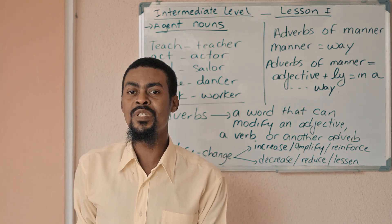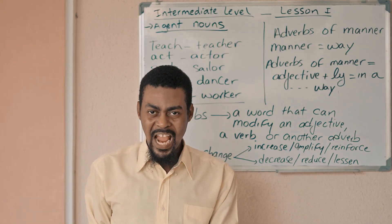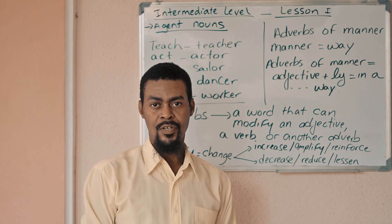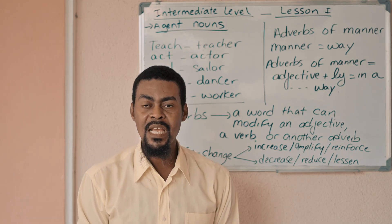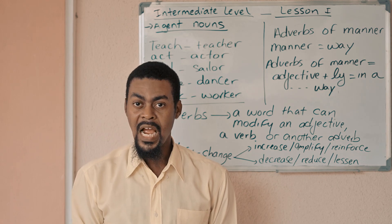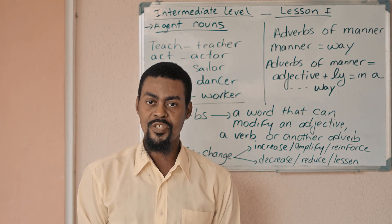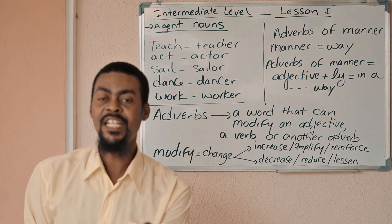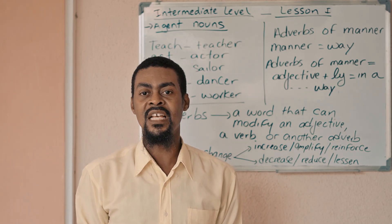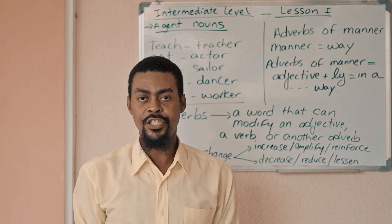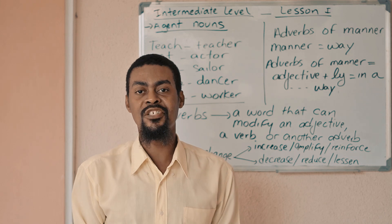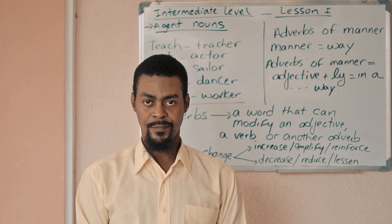We do not use a name or another noun after an agent noun. I am a teacher, not teacher Nelson. I can say I'm Mr. Nelson. Because the word teacher comes from a verb, and this verb is teach. So the one who teaches is a teacher.